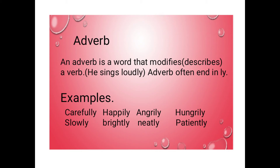Brightly — 'The sun shines brightly.' Here 'shines' is the verb and 'brightly' is the adverb. Neatly — 'She writes neatly.' Here 'writes' is the verb and 'neatly' is the adverb. Patiently — 'The bird flew down and waited patiently.' Here 'waited' is the verb and 'patiently' is the adverb.